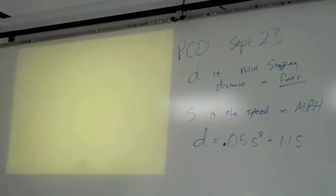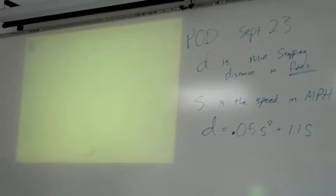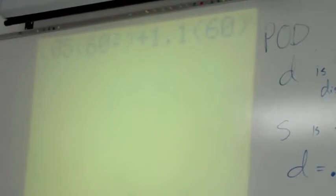Using my handy-dandy overhead calculator, and I honestly don't know if this is going to turn up on the video, but watch and see how I do this. All I'm doing is basically just typing that equation in here. 0.05, and instead of s squared, I'm going to put in the value of s that it gives me. 60 squared plus 1.1 times 60.